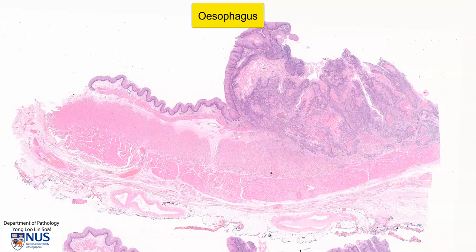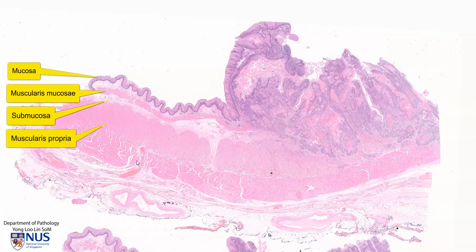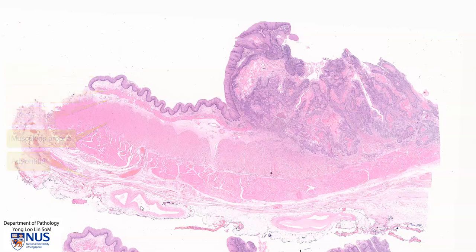Let's have a quick recap of normal esophagus. We have the mucosa, which is composed of stratified squamous epithelium. Here is the muscularis mucosa. This pale area is the submucosa, and then we have the muscularis propria and this is the adventitial layer.